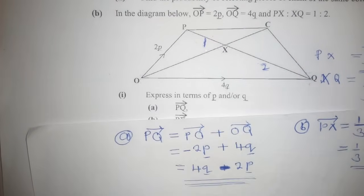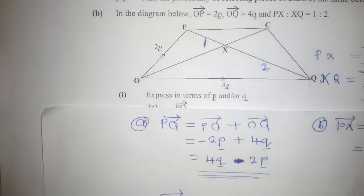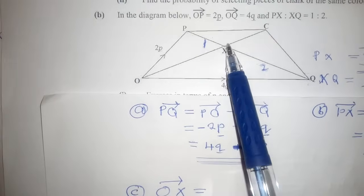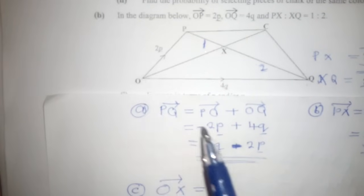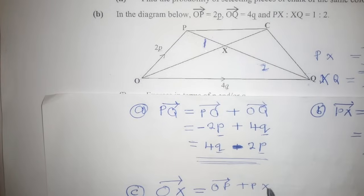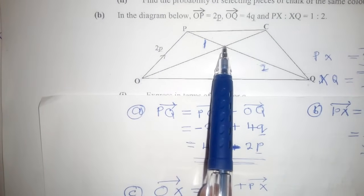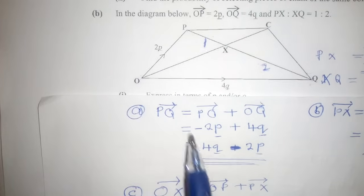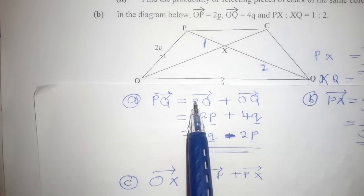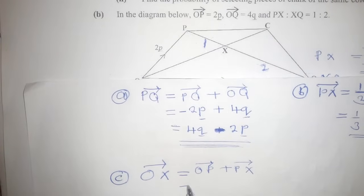We go to part (c). They ask us to find vector OX. For OX, we find the way we can move. We start with O: OX equals OP plus PX. It is very important to start from the letter which is starting — in this case O is starting, so you start with O and move in the direction you want to go.